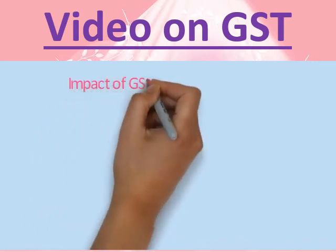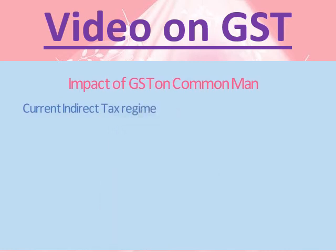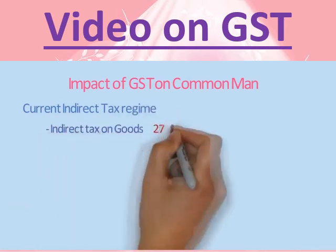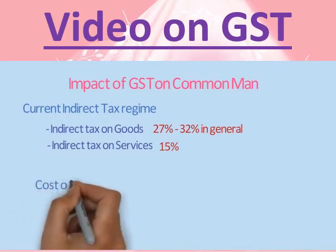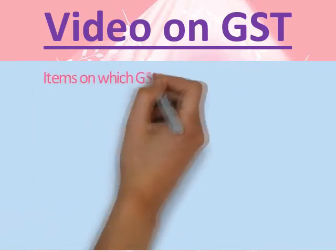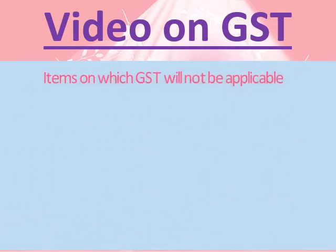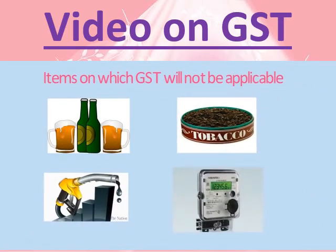Now let's see how GST will impact the common man. In the current non-GST regime, indirect taxes on goods are 27 to 32% of the cost of goods in general, and about 15% of the cost of services. However, once GST comes into effect, the cost of goods is likely to come down while the cost of services will rise. But the overall tax burden on the consumer is likely to reduce. There are certain items on which GST will not be applicable — for example, alcohol, tobacco, petroleum products, and electricity bills — these will retain their current tax structure.